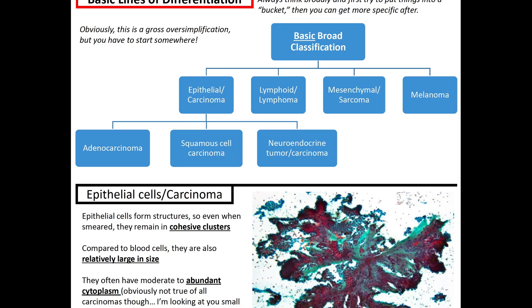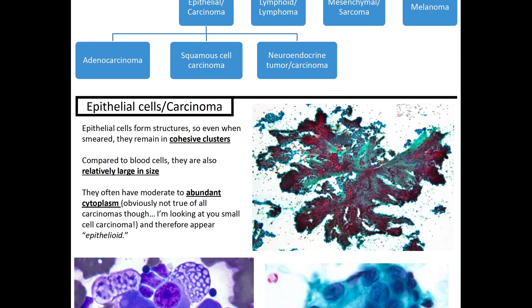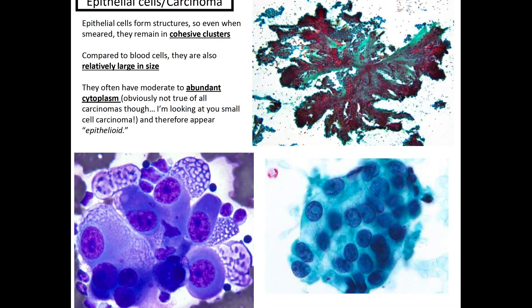Whenever you get a specimen in cytology, you'll start working it up using a broad classification: is it epithelial like a carcinoma, lymphoid like a lymphoma, mesenchymal like a sarcoma, or could it even be melanoma, which seems to pop up anywhere? If you know it's epithelial, you can subclassify further into adenocarcinoma, squamous cell, and neuroendocrine tumors — a lot of that done with IHCs, which I won't dive into in this video.